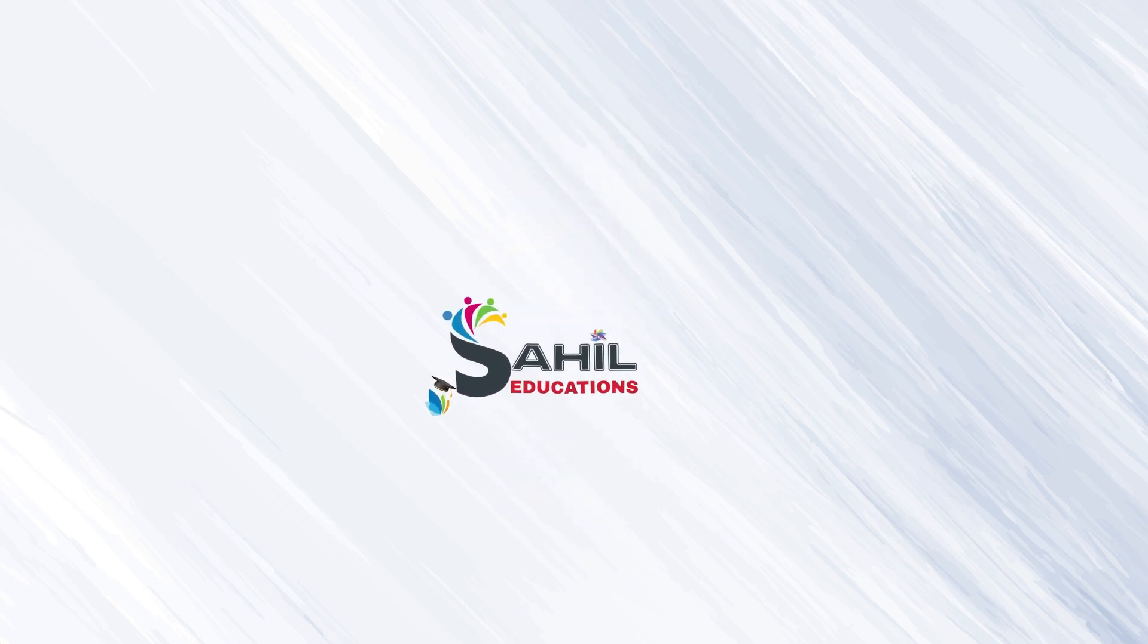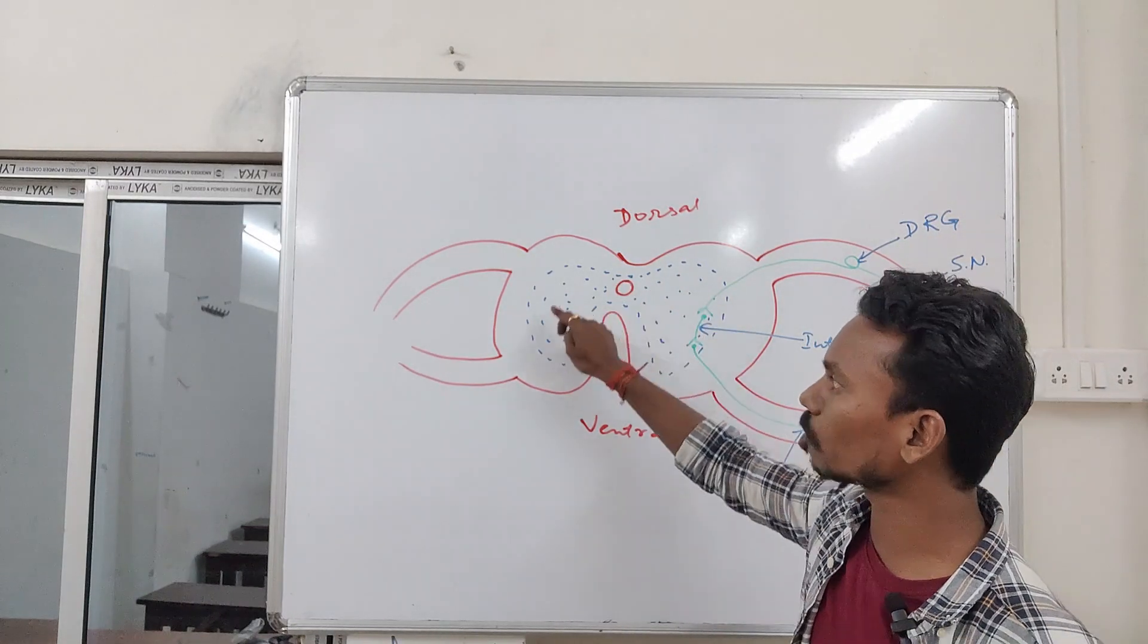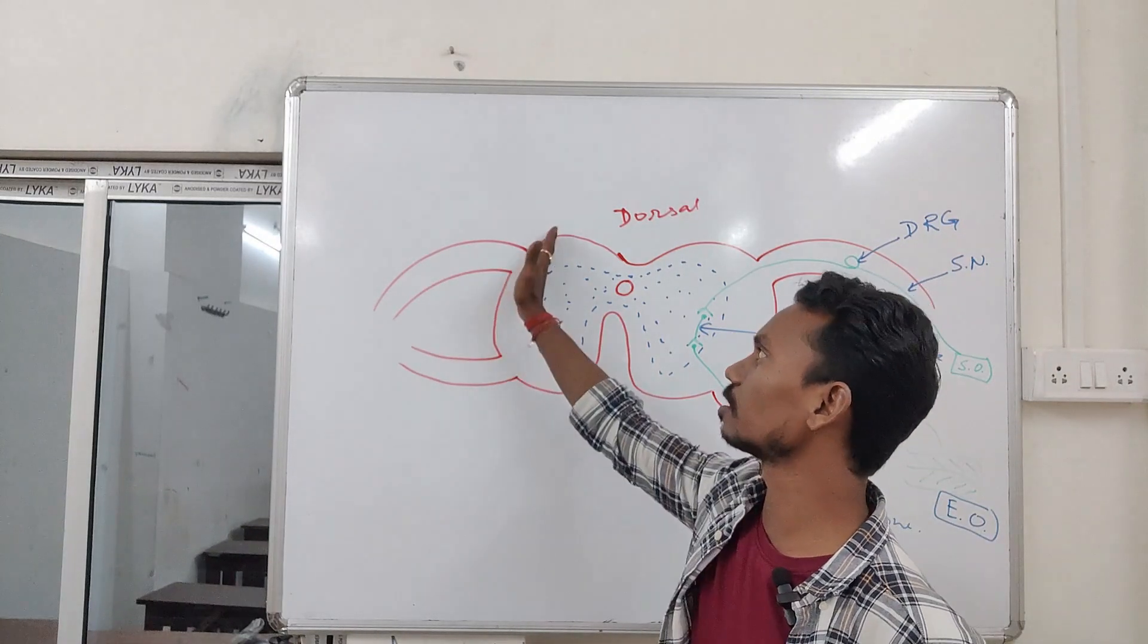Just after the central canal, you can see these dotted structures. This one is the gray matter part of your spinal cord, and this one is the white matter part.